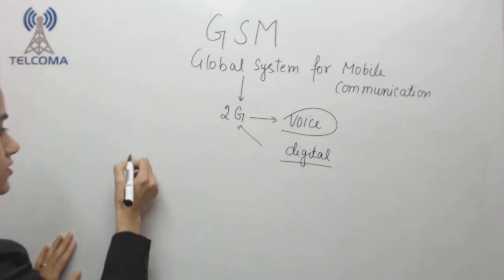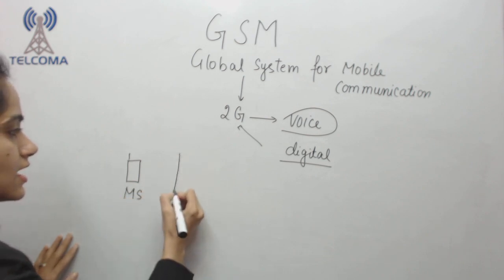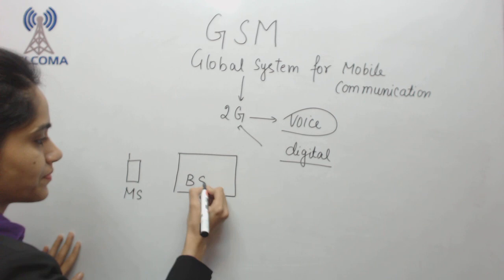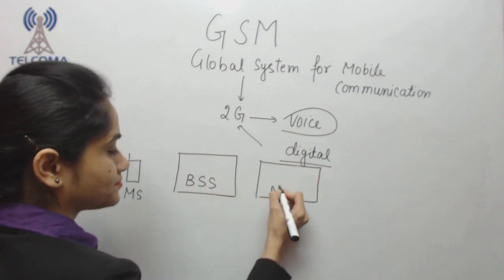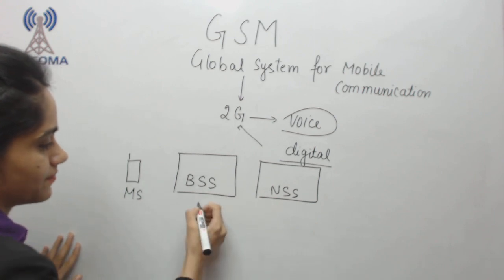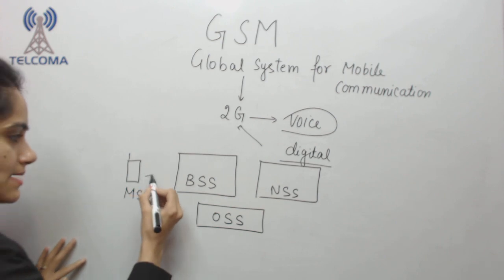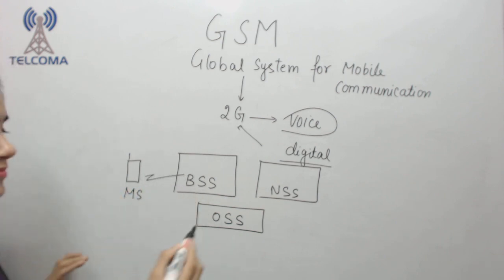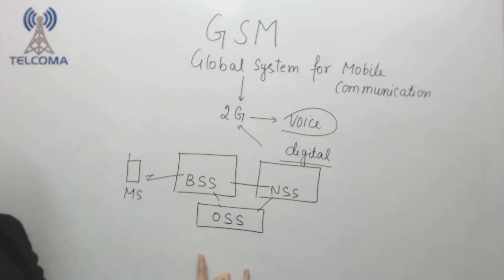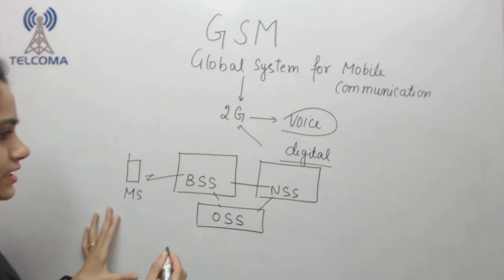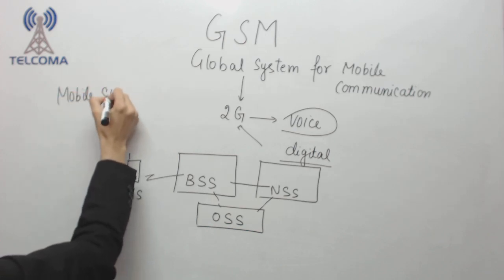The network architecture is divided into four parts. The very first is MS. MS is connected to BSS. BSS is connected to NSS. Then we have OSS. MS connects to BSS, BSS connects to NSS, and both BSS and NSS are connected to OSS. MS stands for Mobile Station.